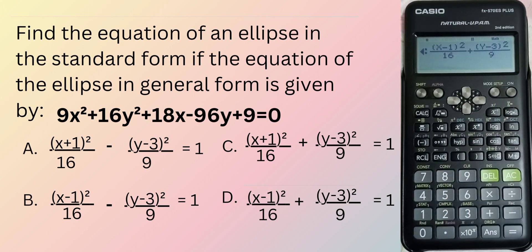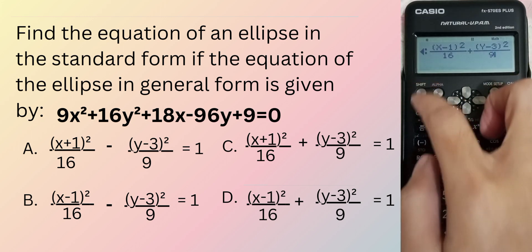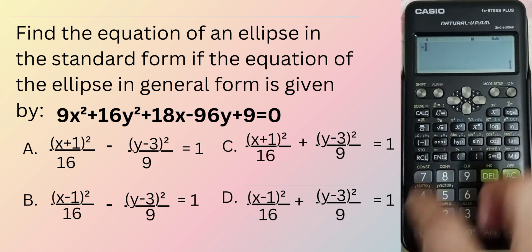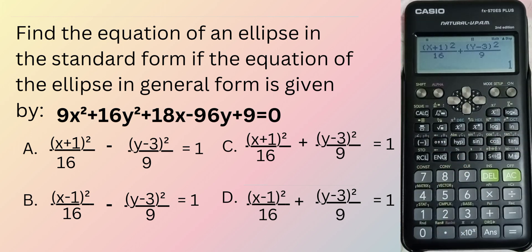So, hindi natin nilalagay yung equal to 1. Then, wala tayong equal sign, therefore, calc lang. X natin is negative 1, y is 6. Sa sagot ng 1, yun yung sagot. So, ayun, may 1 na agad. And yung isa ay 1.25. So, the answer is C.